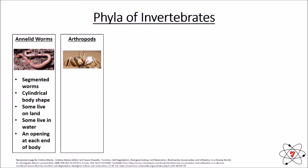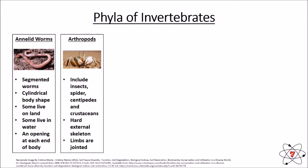Arthropods are our second phyla. Arthropods include insects, spiders, centipedes, and crustaceans. Arthropods generally have a hard external skeleton and they have limbs that are jointed. If you look at a crab, you can see very clearly it has a hard outer shell, but its legs also have joints in them. So an invertebrate with a hard shell and jointed limbs is an arthropod.